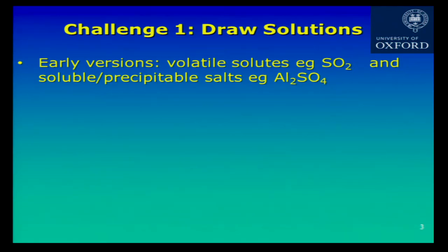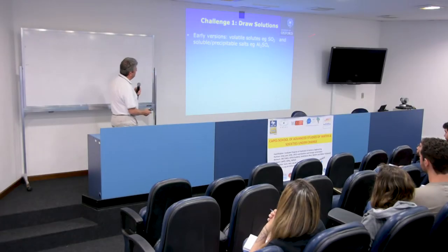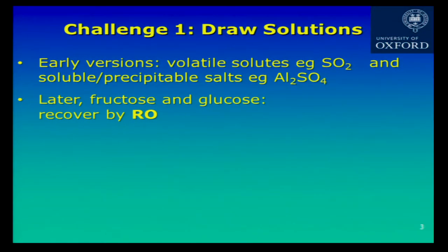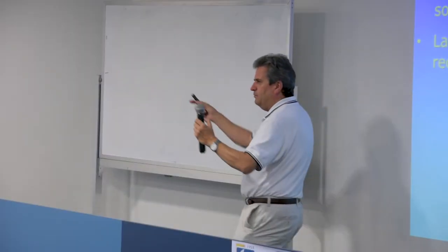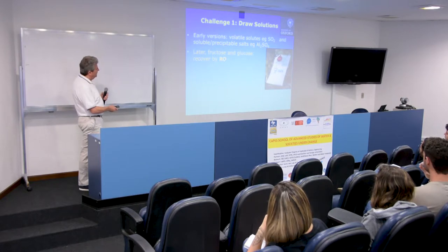Some early draw solutions used volatile solutes — things like sulfur dioxide that would dissolve in water but be pushed out of solution at high temperatures, since gases become less soluble at higher temperatures. Also things that could dissolve and then precipitate, like aluminum sulfate, whose solubility is sensitive to temperature. Then people started to use sugars — fructose and glucose. The X-PAC was developed by the U.S. Army: it contains fructose and glucose, which is potable. You throw it into contaminated water, leave it for 10 minutes, and it fills out with water that you can drink — an emergency water treatment system.